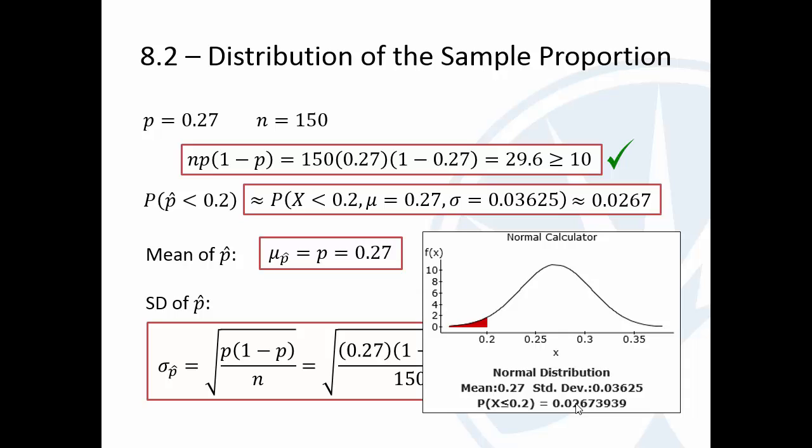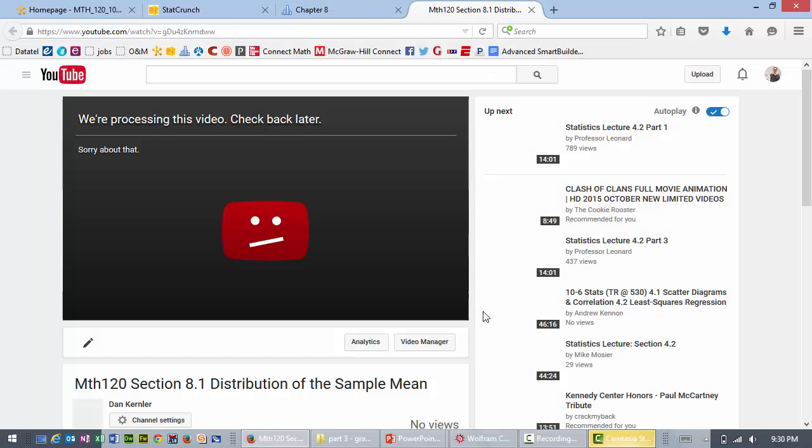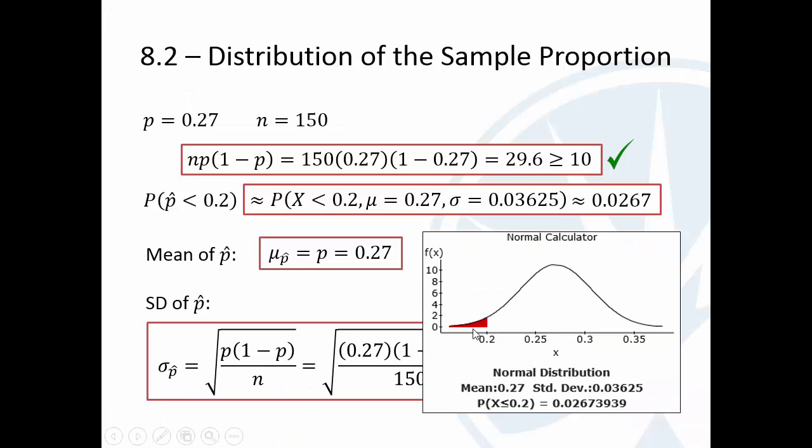So yeah, if only 20% of our sample eats alone, then it's actually very unusual. So what's probably true is that ECC students eat alone less than the American population does. If our value ended up at 0.2, the likelihood of being over here is so small that our mean is probably not 0.27. Our proportion is probably closer over here.